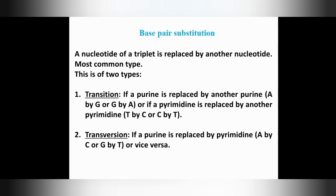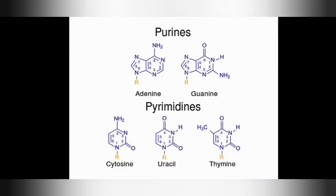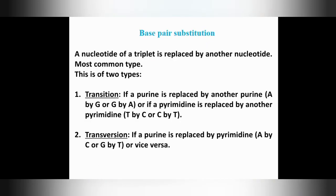Base pair substitution has two forms: transition and transversion. Since there are two types of nitrogenous bases — DNA has a phosphate group, deoxyribose sugar, and nitrogenous bases — the purines are adenine and guanine, and the pyrimidines are thymine and cytosine, with uracil possible in RNA.